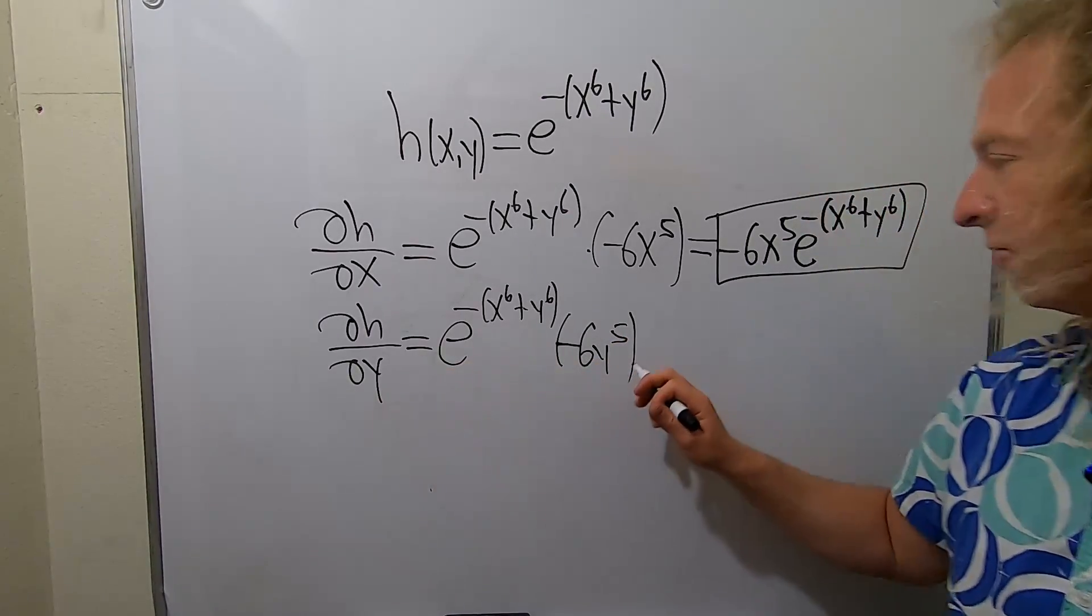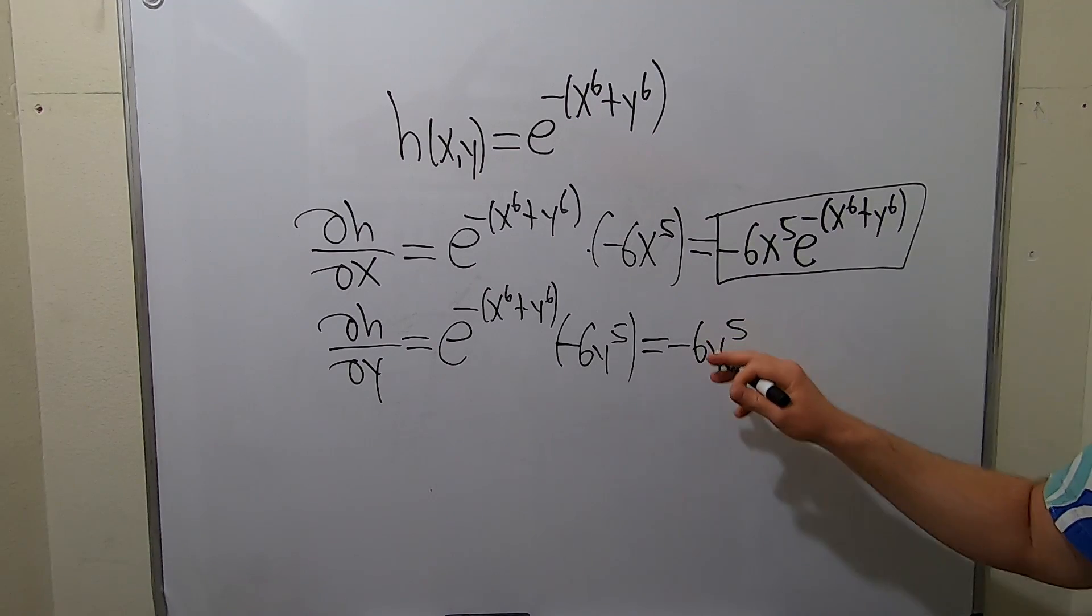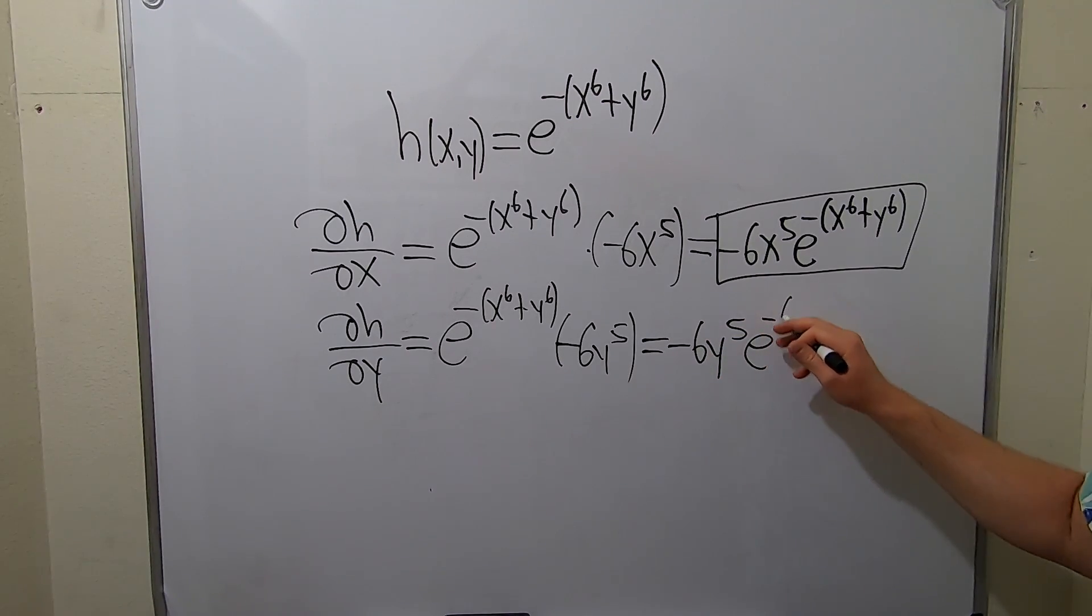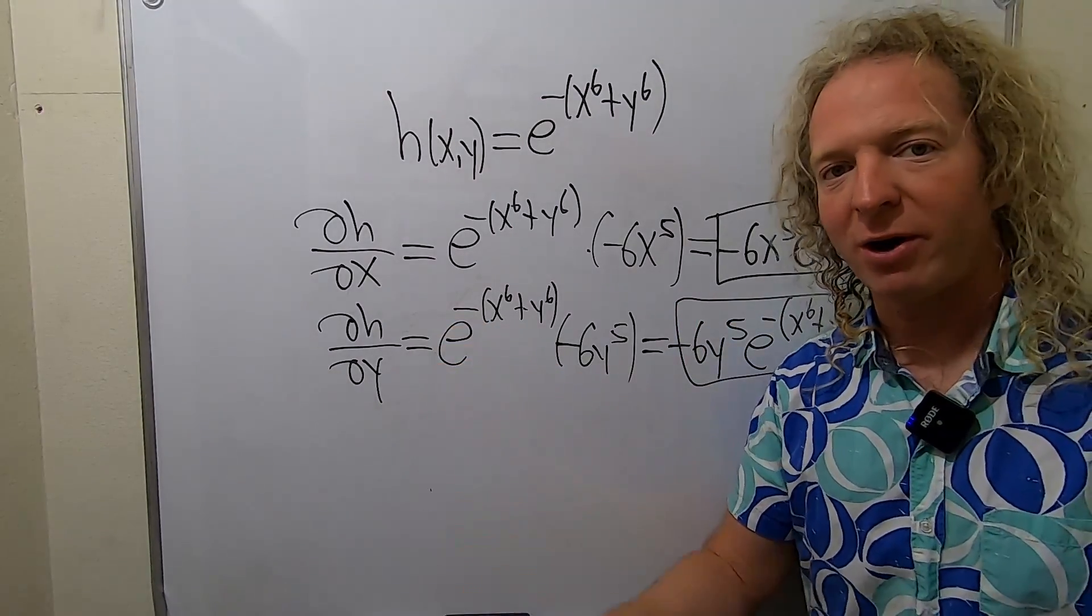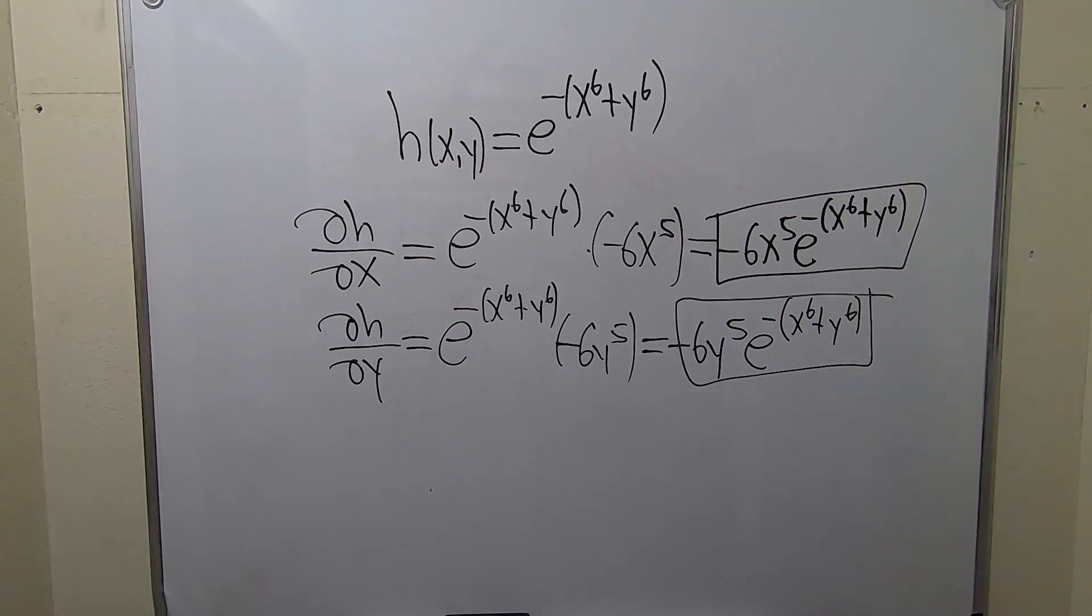As before, we just put this in the front. This is -6y^5 times the exponential function, e^(-x^6 + y^6). And that would be the partial derivative of H with respect to Y. I hope this video has been helpful. Take care.